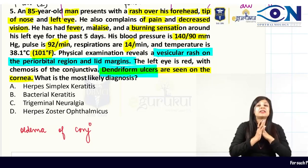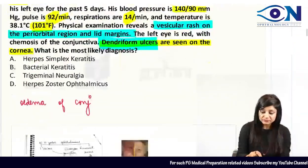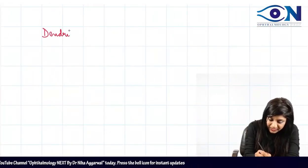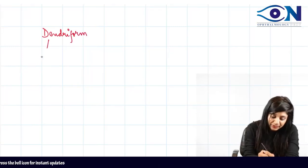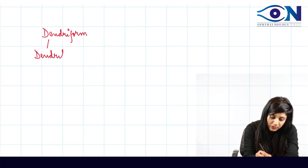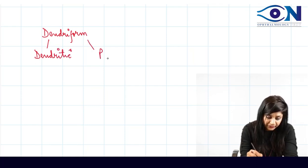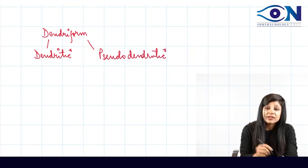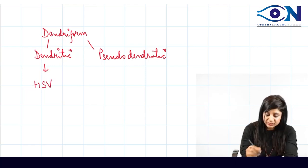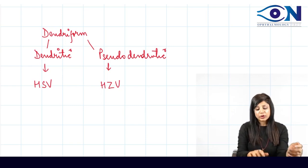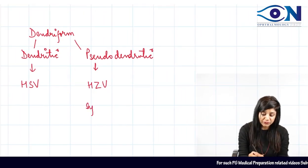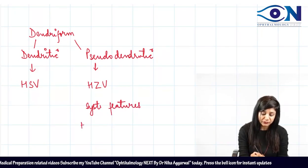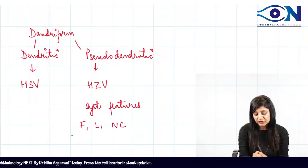Now what is our most likely diagnosis? Dendriform ulcers can be dendritic — caused by herpes simplex virus — or pseudodendritic — caused by herpes zoster virus. Here we have systemic features, which are present in herpes zoster, and involvement of all three divisions — frontal, lacrimal, and nasociliary — of the fifth nerve, pointing toward pseudodendritic lesions of herpes zoster.